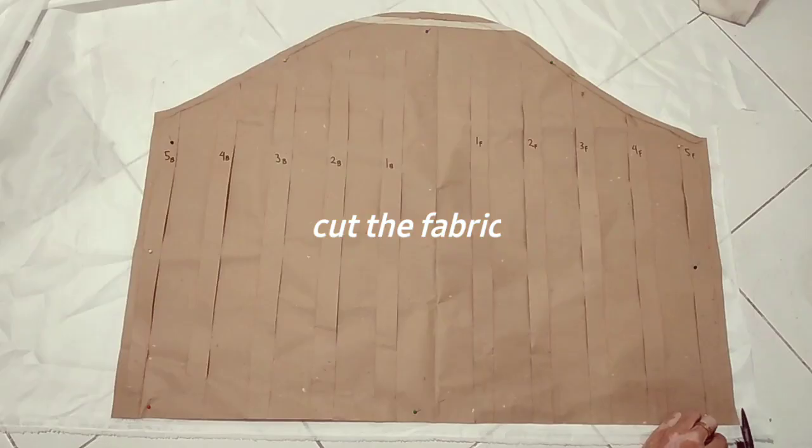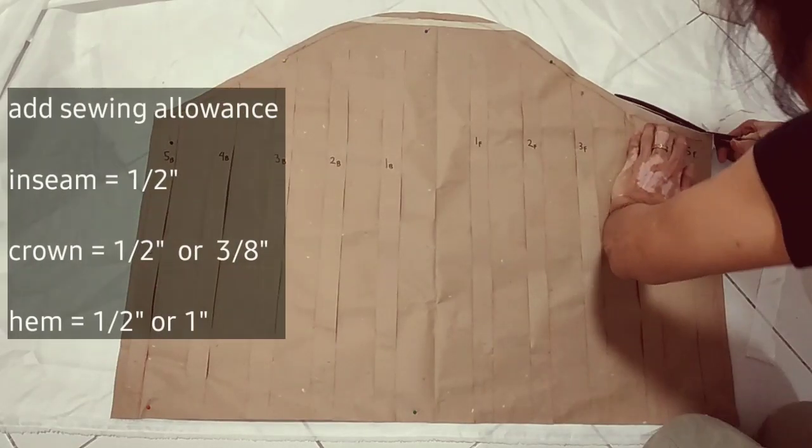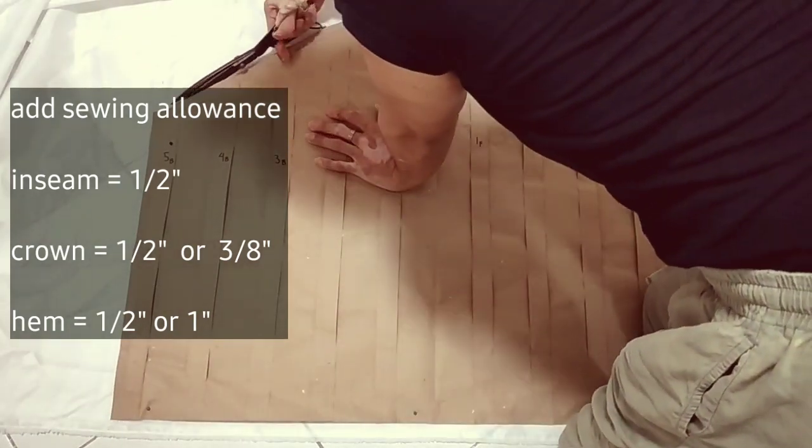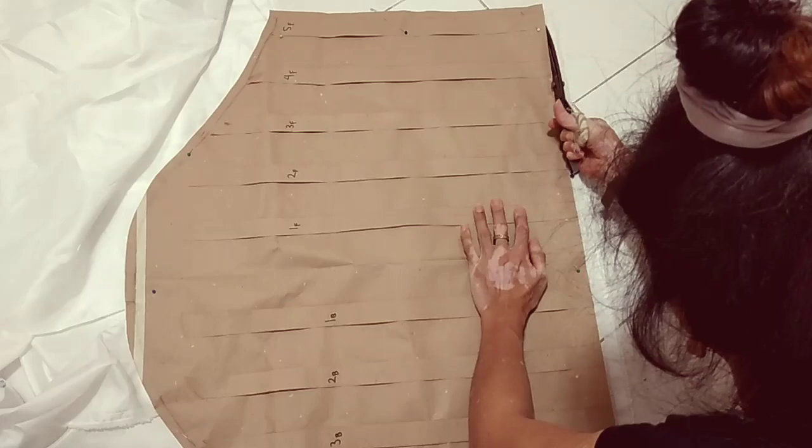We're now ready to cut the fabric. For the sewing allowance at the inseam, I have one half inch. For the crown, three eighths, and for the hem, it's either one half or one inch.